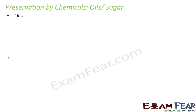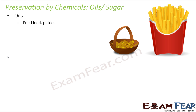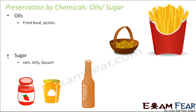Oils do not allow bacteria to survive because the pH of oil is not suitable for bacterial survival. Fried foods and pickles contain a lot of oil, which acts as a preservative — completely fried food stays good longer even without refrigeration. Sugar is another important preservative found in jam, jelly, and squash. Sugar reduces moisture content, and since more moisture favors bacterial growth, reducing it inhibits microorganism growth.